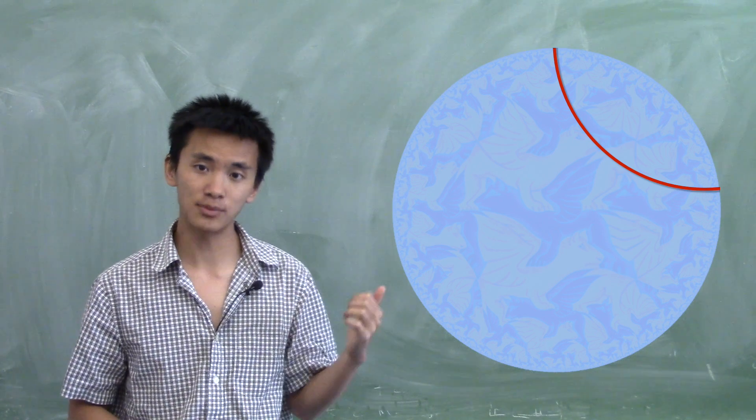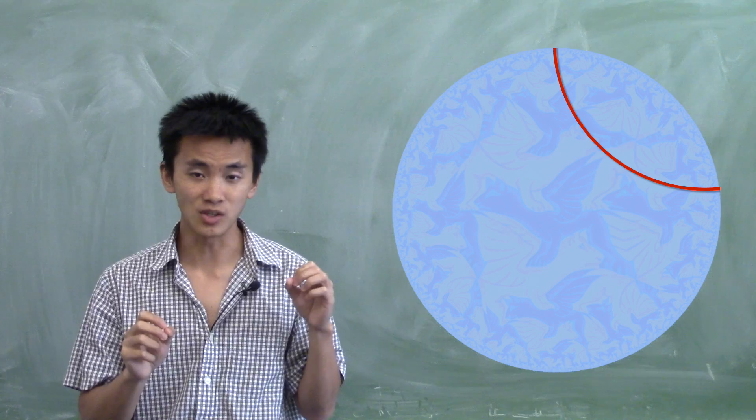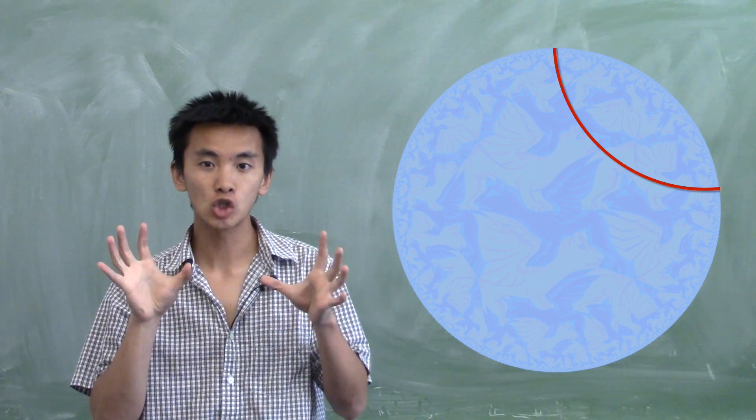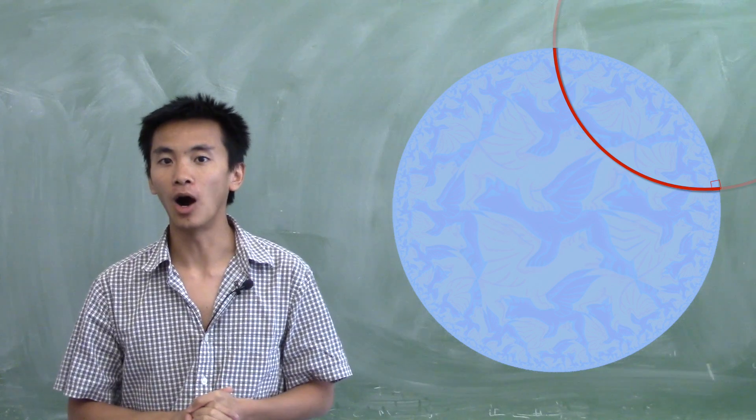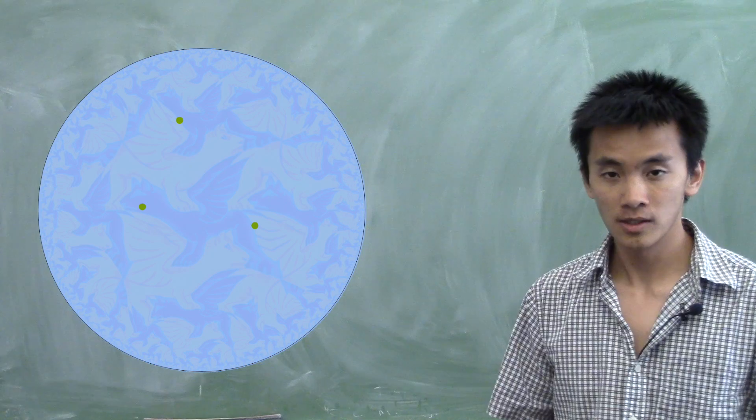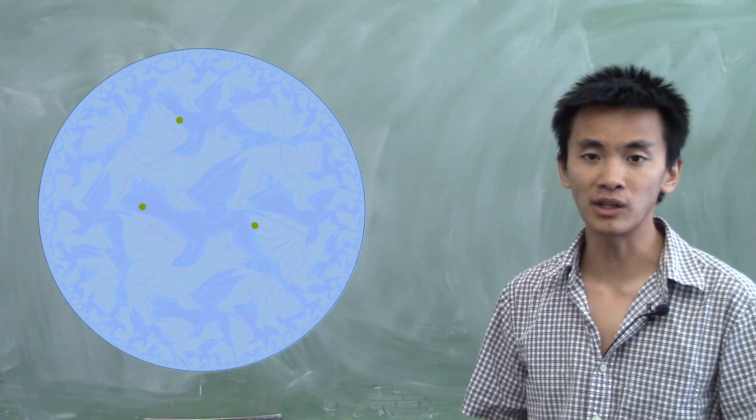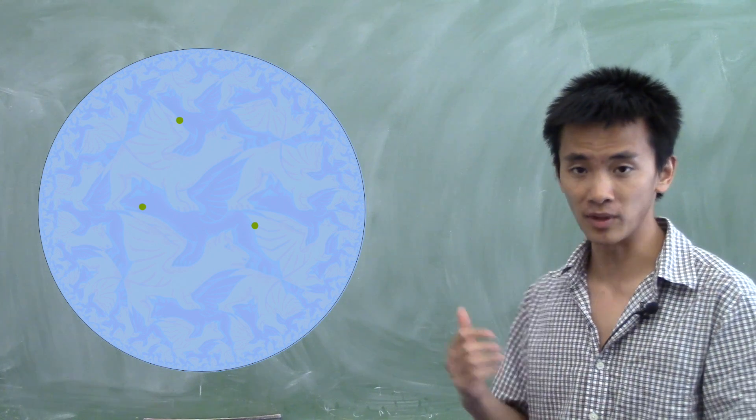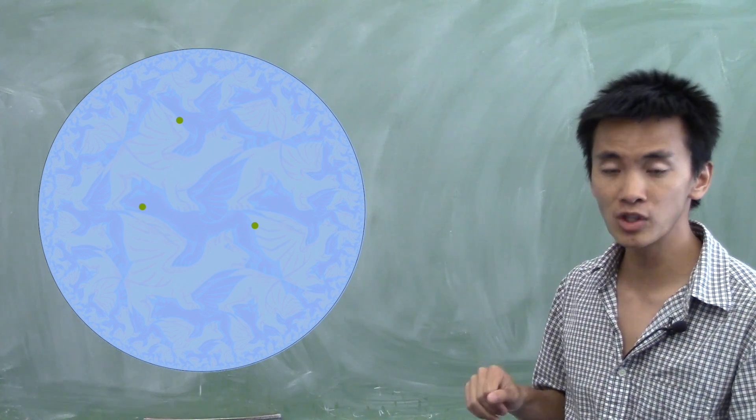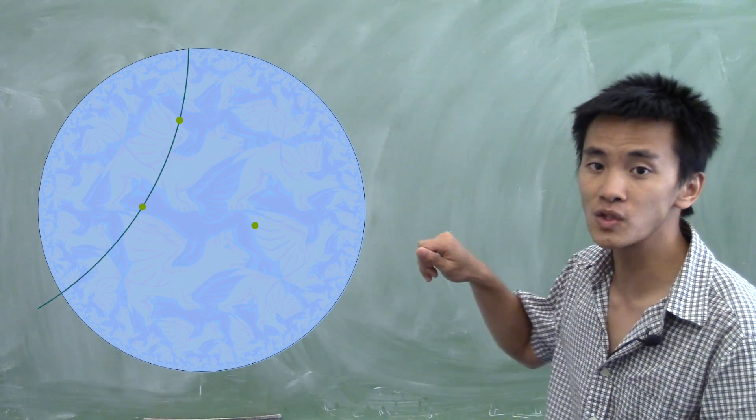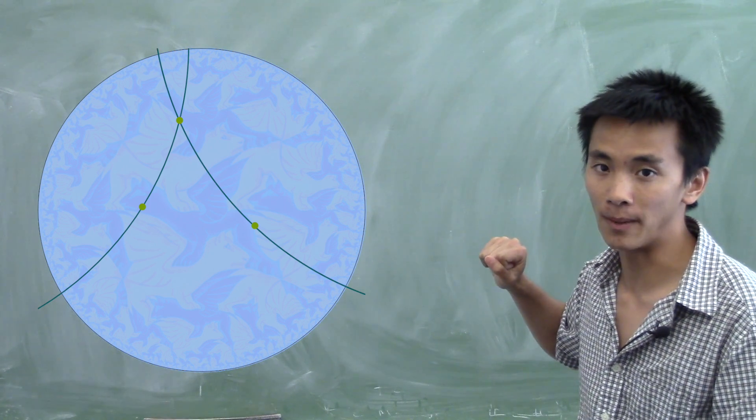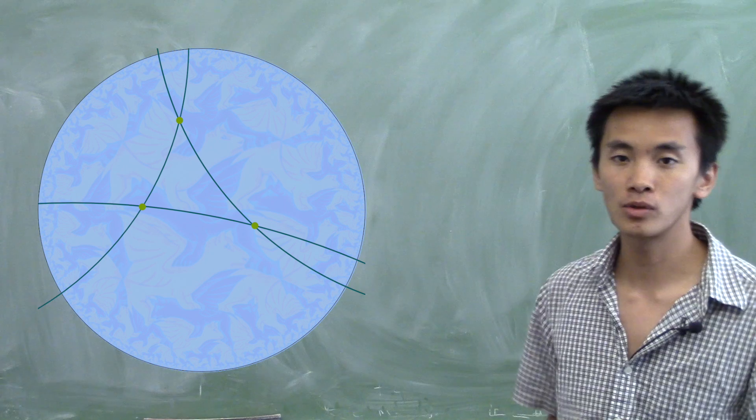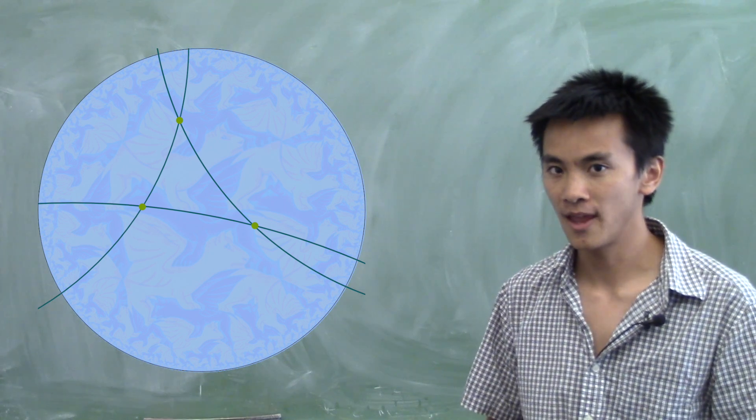There's more than that. In fact, Poincaré showed that in his projection, straight lines would be exactly circles that are perpendicular to the boundaries of the map. So if I give you three corners of a triangle, if you want to draw the triangle that corresponds to these three corners, you're going to have to draw the pieces of circles that are perpendicular to the boundary of the map and that go through two of the three points. This gives you this triangle.